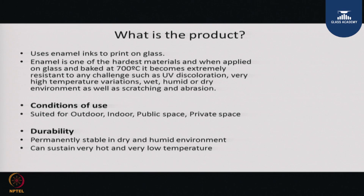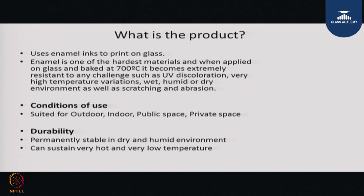As a product, it uses enamel ink printed on the glass, which is then heat treated. Once the printing is done, the glass is cut and sent for tempering. Once tempered or heat treated, you cannot peel off the ink — it becomes a monolithic part of the glass itself, making it very robust. Enamel is one of the hardest materials, and when applied on glass and baked at 700 degrees Celsius, it becomes extremely resistant to UV discoloration, high temperature variations, wet, humid or dry environments, as well as scratching and abrasion.